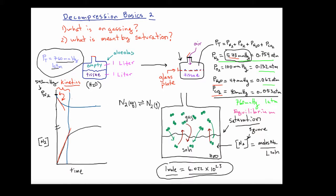This part of the graph — I'll change the color and put some arrows on it — represents our equilibrium situation. This is what happens when the diver is at a position in the water column where the gas above the surface of the tissue has a long enough time frame for the gas and the solution to reach the equilibrium point, where there is no net change between the nitrogen in the gas phase and the nitrogen in the solution phase.